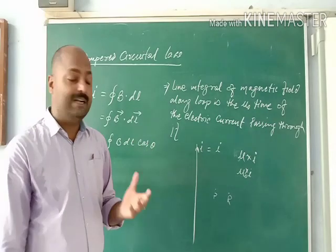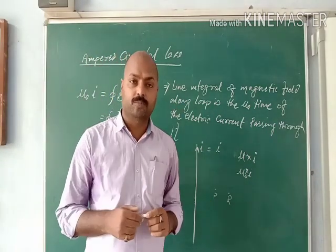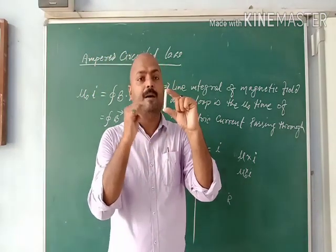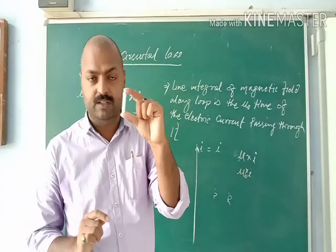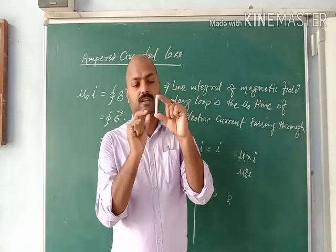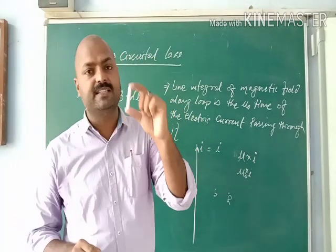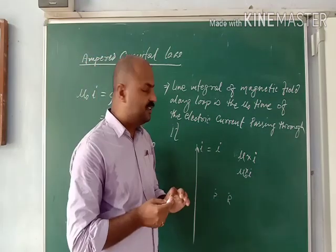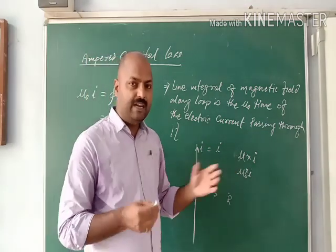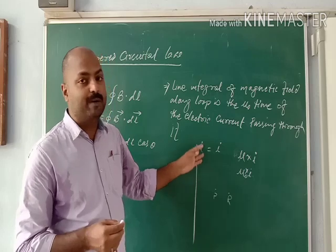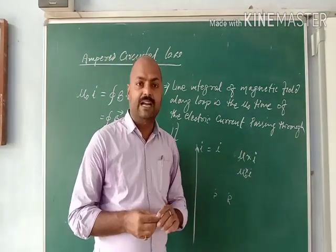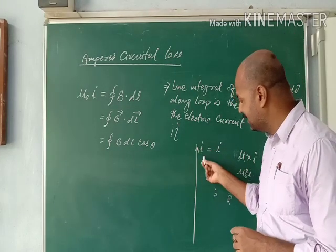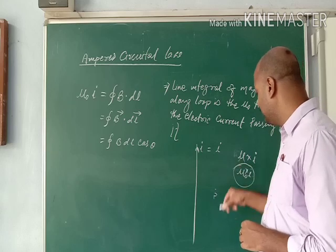Ampere has given another method. Suppose I amount of current is flowing through any conductor. If I amount of current flows through it, the magnetic field produced by this conductor is also proportional to I. But we know that the permeability of free space is μ₀, so the amount of magnetic field produced by the current-carrying conductor I is μ₀ times I.